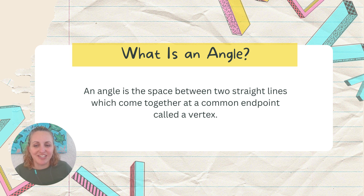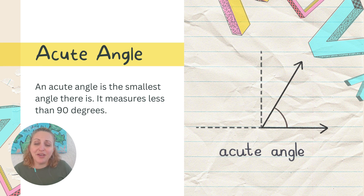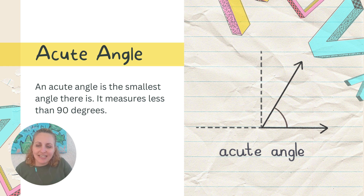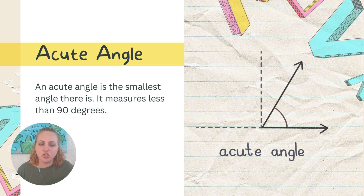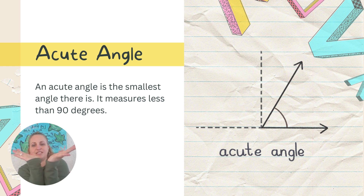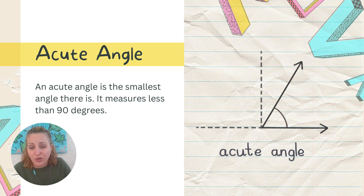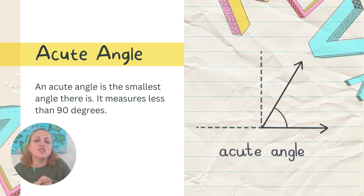First, we have the acute angle. I always like to say 'oh so cute' because it's our small angle. An acute angle measures less than 90 degrees. You'll hear a lot about 90-degree angles. An acute angle is the smallest angle — if you look at the picture, it has the least amount of distance between those two rays. Imagine you just opened the door a little bit to peek inside — that would be an acute angle. To remember it: 'oh so cute' means it's our small angle.